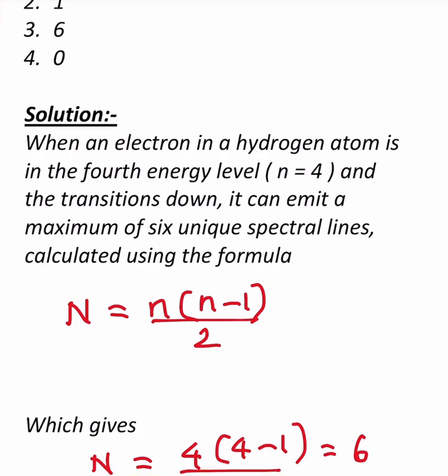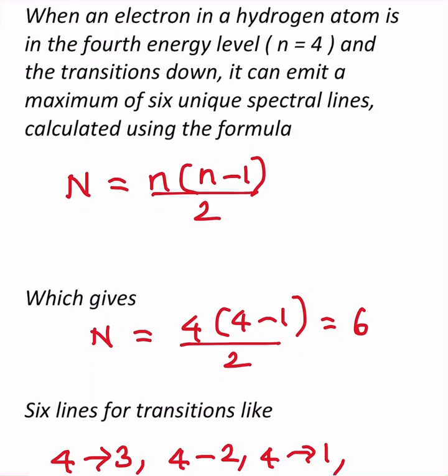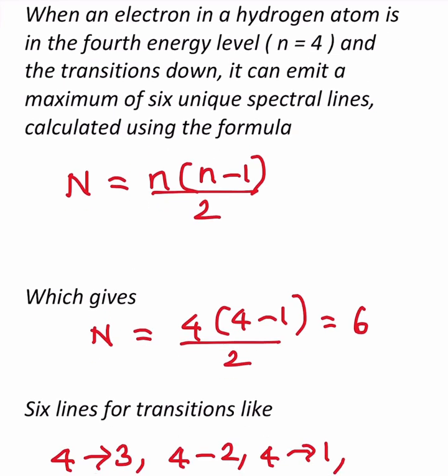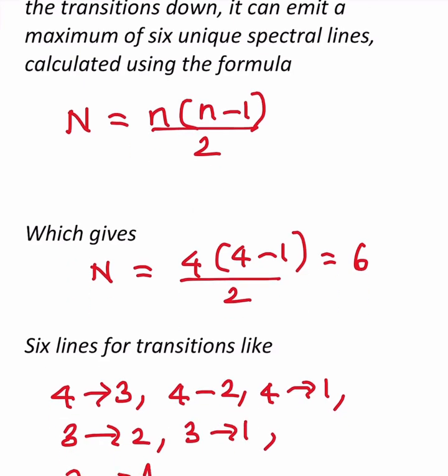How we get it? We can use this formula: N, that is number of spectral lines, is equal to n into n minus 1 divided by 2. Capital N is the number of spectral lines, small n is the number of the orbit.